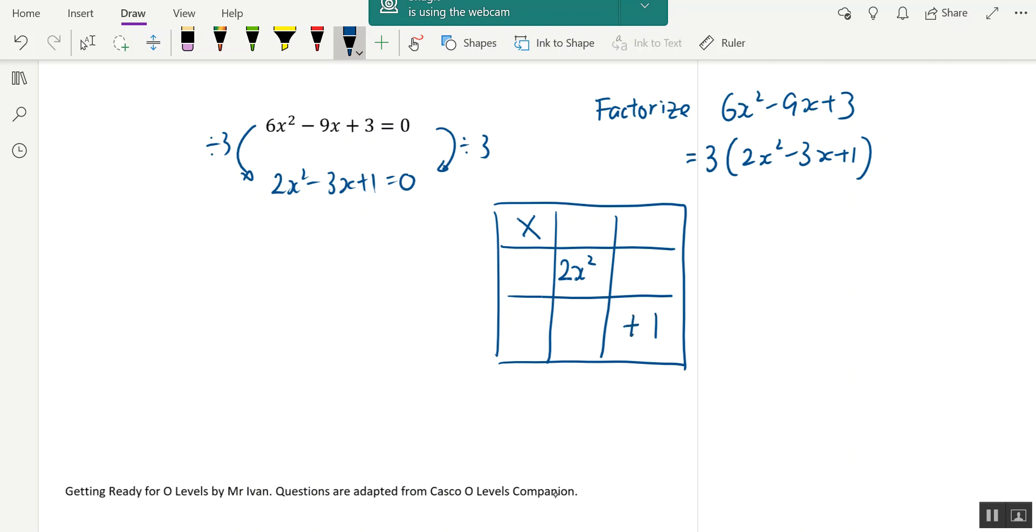Now what times what will give you 2x²? It will be 2x times x. And then because it's 1, it's very easy to be 1 and 1 here. Now, however, we need to be careful. You look here, we need to form a negative 3x here.